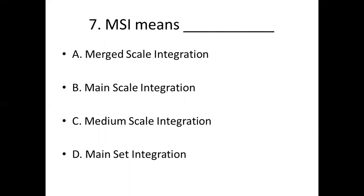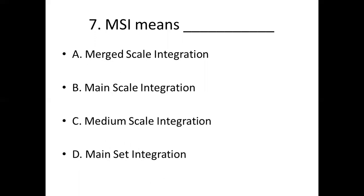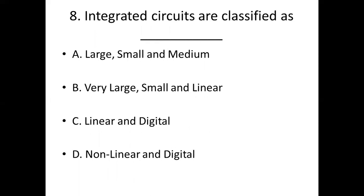Seventh bit: MSI means dash. Option A: merged scale integration. Option B: main scale integration. Option C: medium scale integration. Option D: main set integration. Answer: Option C, medium scale integration.